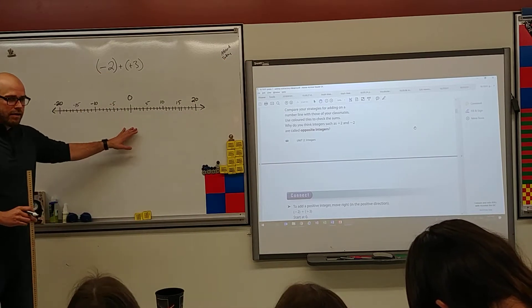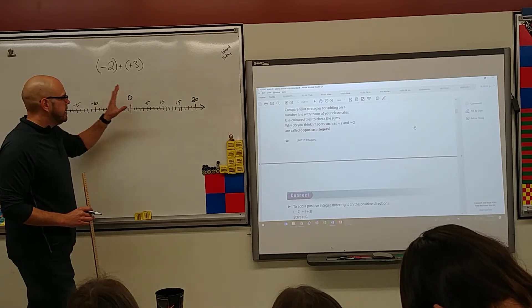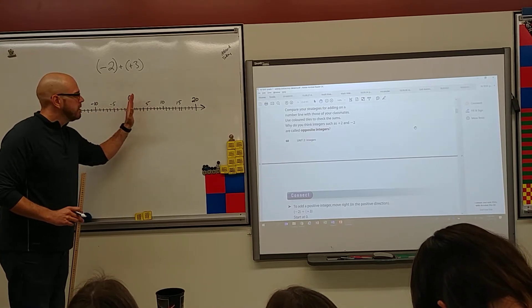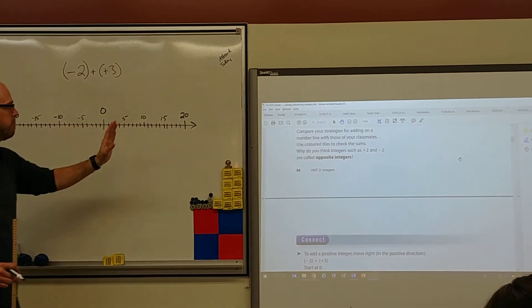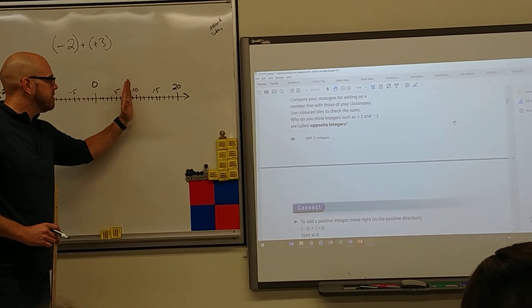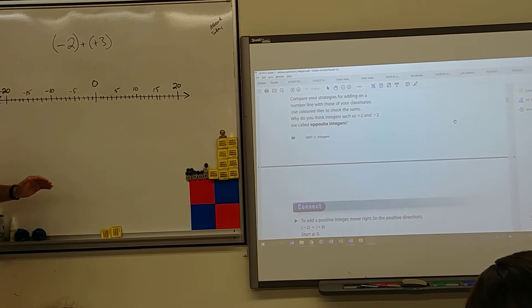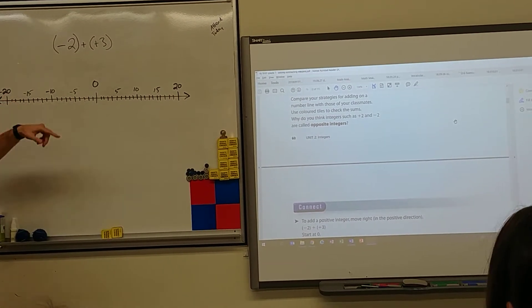Got a number line here. First what we did, we created a line and we made a zero. Then we put the positive 20, the negative 20. Then we put in our benchmarks: 10, 5, 15, negative 10, negative 15, negative 5. And we approximated the rest.